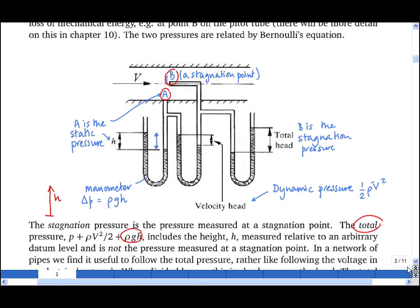The total pressure therefore contains rho g h, the gravitational potential energy per unit volume, rho v squared upon 2, which is the kinetic energy per unit volume, and pressure, which is the pressure potential energy per unit volume.